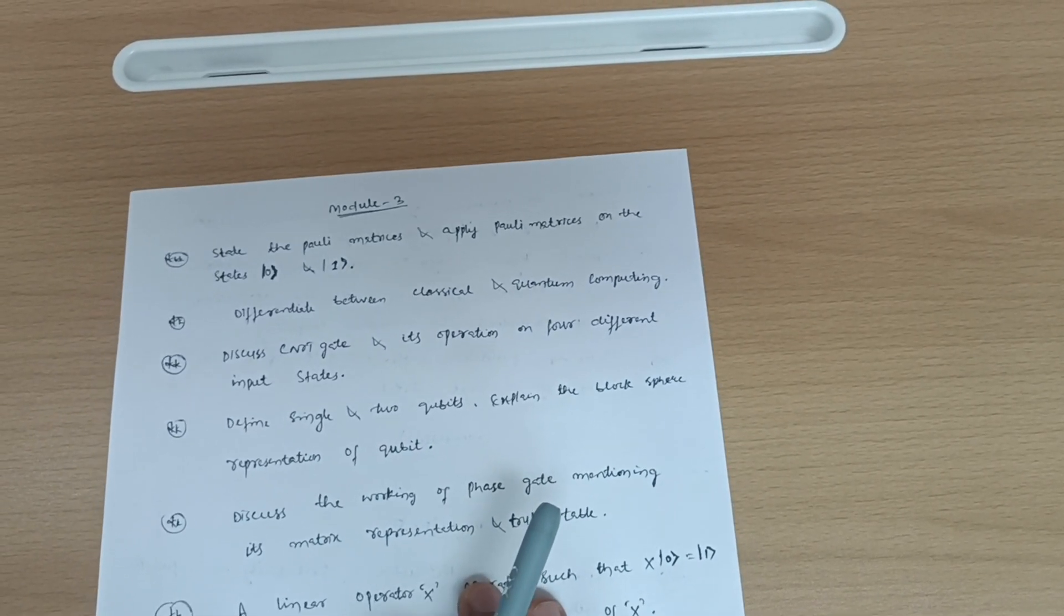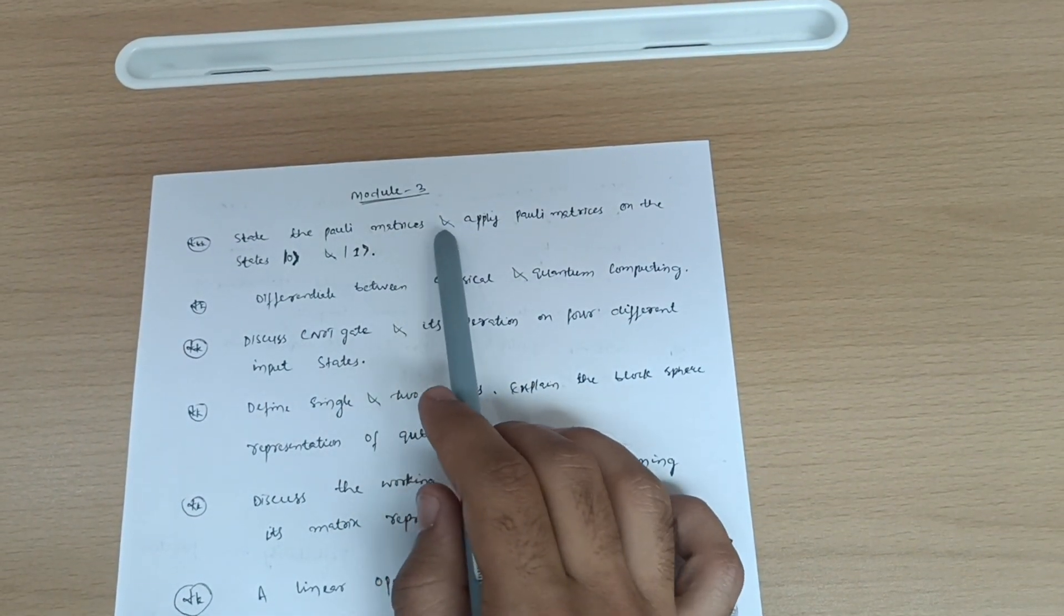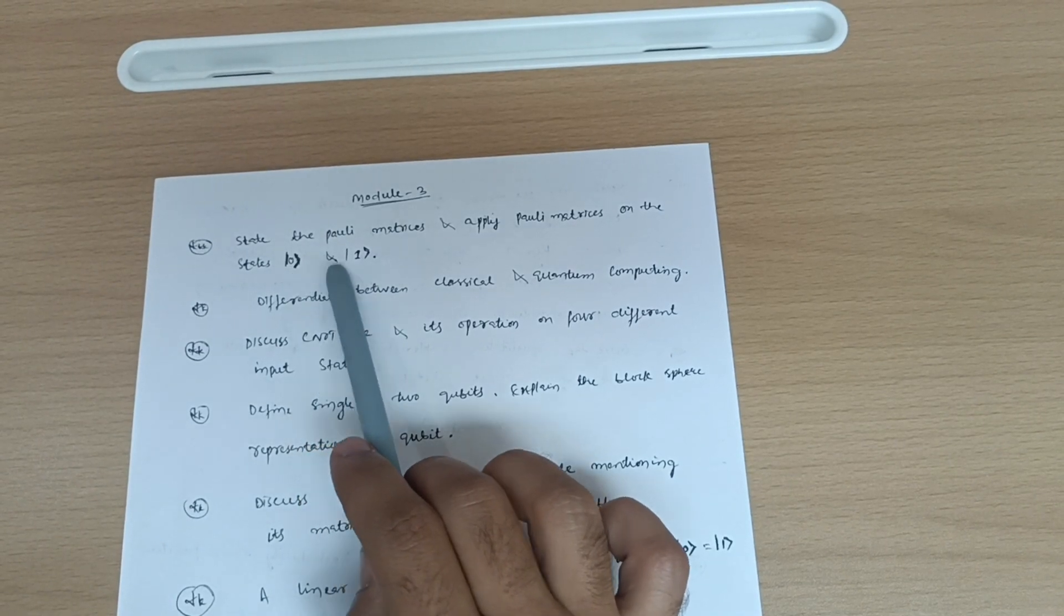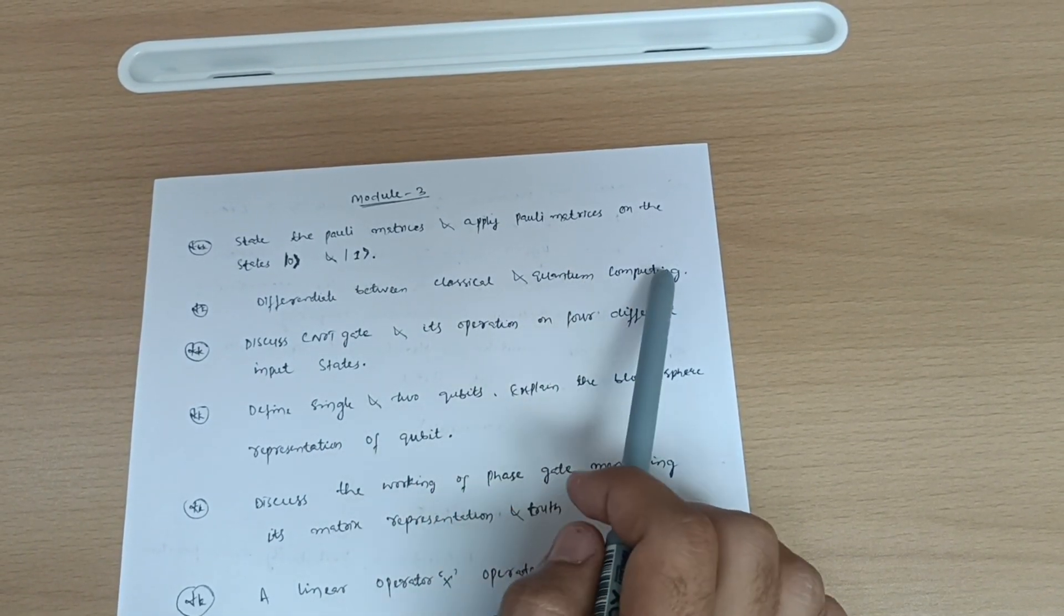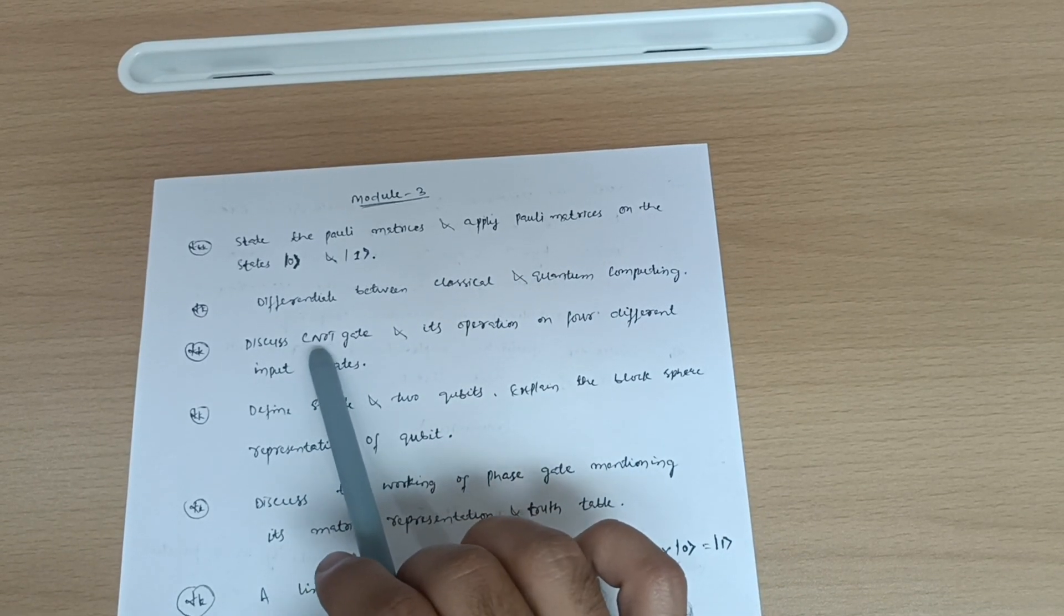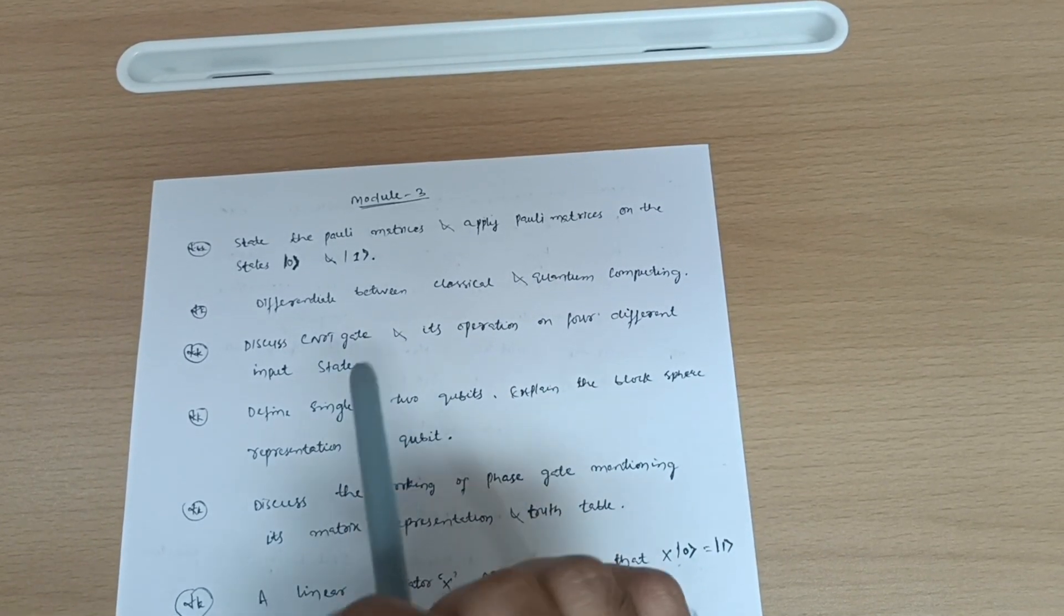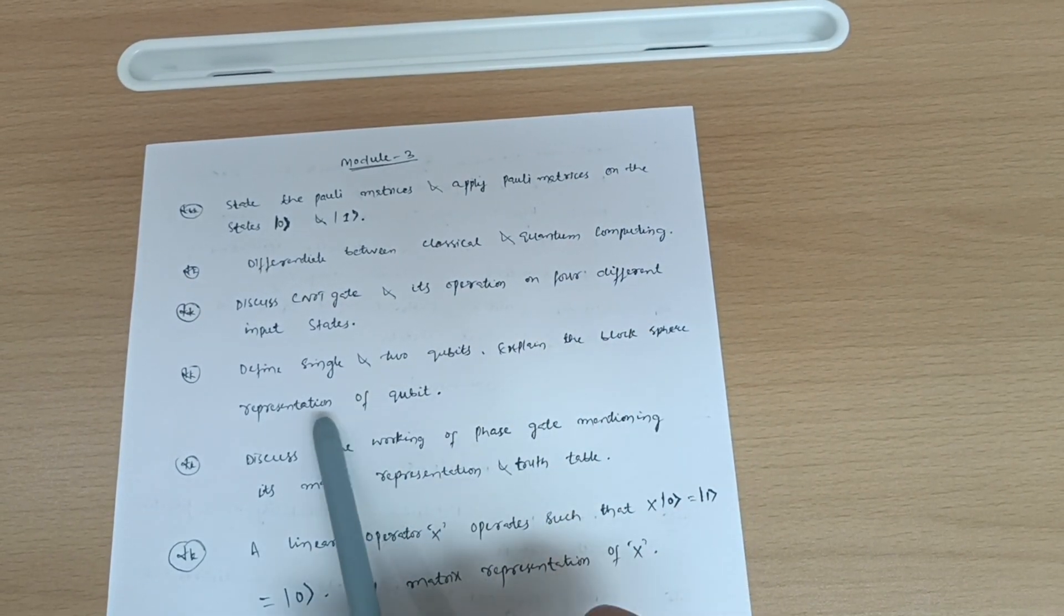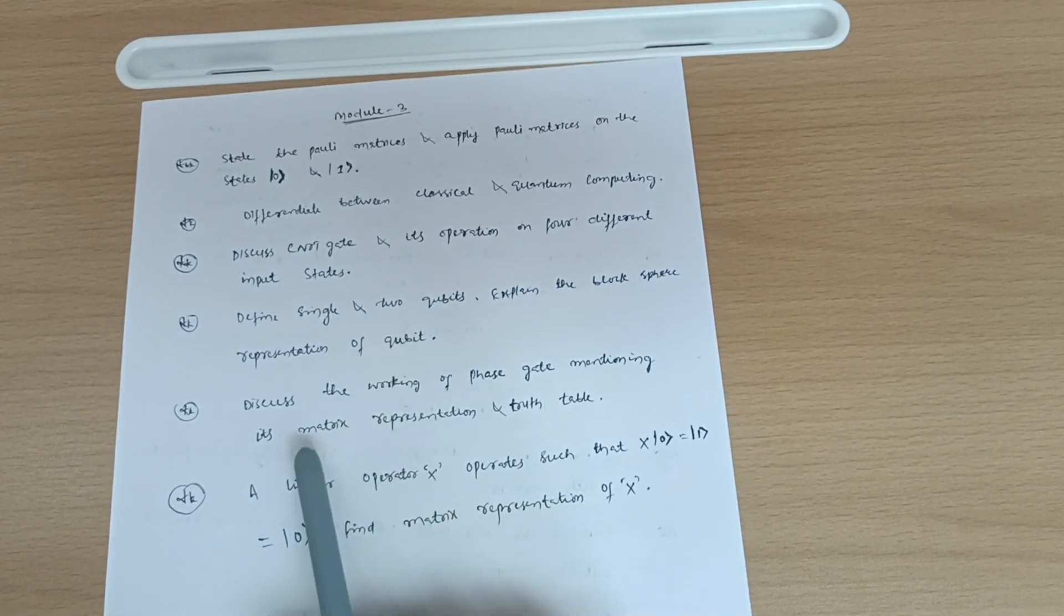Now module three, where you have to cover at least six concepts and six questions. State the Pauli matrices and apply Pauli matrices on the states zero ket and one ket. Next is differentiate between classical and quantum computing. Discuss controller NOT gate and its operation on four different input states. Define single and two qubits, explain the Bloch sphere representation of qubit.